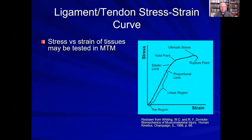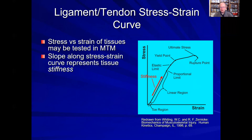When a ligament or tendon is placed into a materials testing machine, we can generate something called the stress-strain curve. Strain is on the x-axis and tells us the deformation of the material. Stress is on the y-axis and tells us the force over cross-sectional area. The slope anywhere along this curve represents the stiffness: a more vertical slope indicates a stiffer material, and a lower-inclined slope indicates a less stiff material.